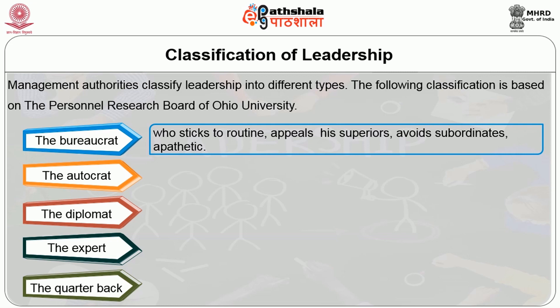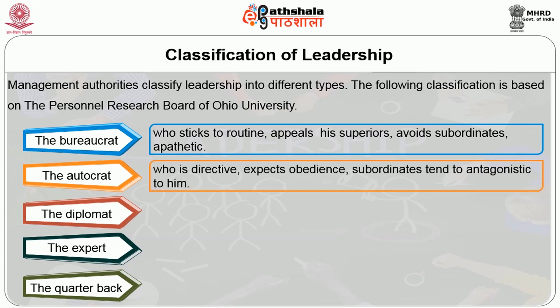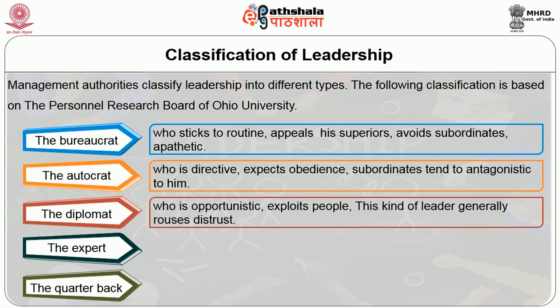Next is autocrat, who is directive, expects obedience, and subordinates tend to be antagonistic to him. The third is the diplomat, who is opportunistic and exploits people. This kind of leader generally arouses distress.